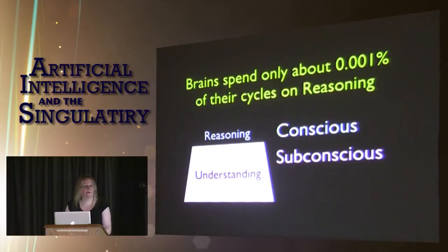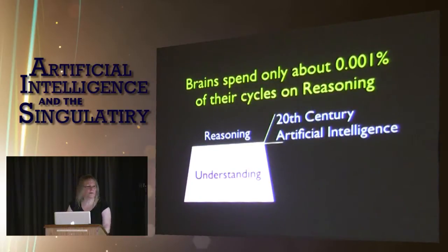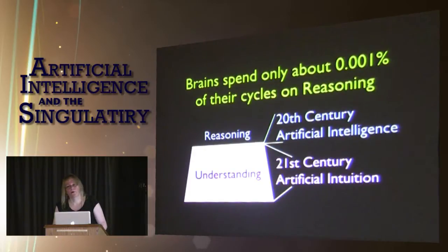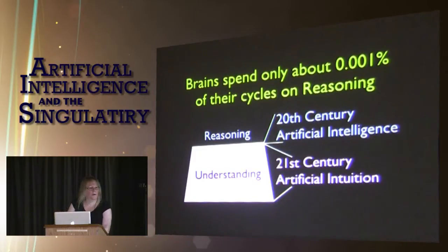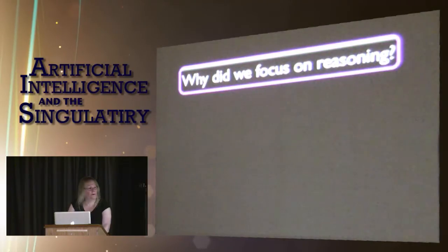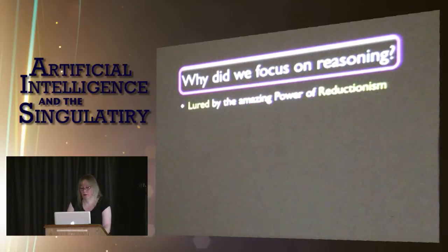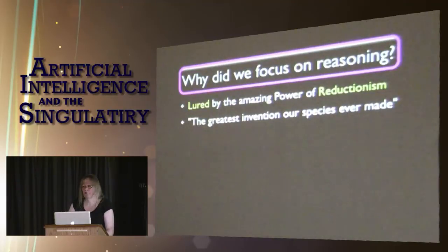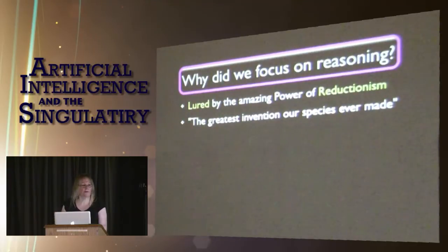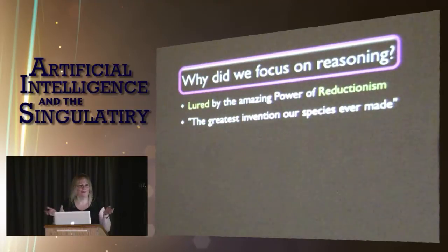Reasoning should be just a paint-thin layer on top of our understanding. In the 20th century, the AI community was overly concerned with this reasoning part to almost the exclusion of everything else. Now it's time to look at the understanding part — that's what my artificial intuition research is all about. Why did we focus on reasoning so heavily? We learned by the amazing power of reductionism, which is, in my opinion, the greatest invention our species has ever made. It underlies all science and most of our problem solving, and we're not aware of it because we're surrounded by it like fish in water.